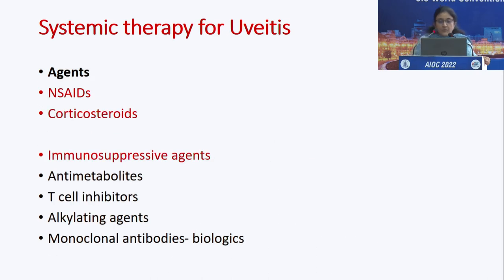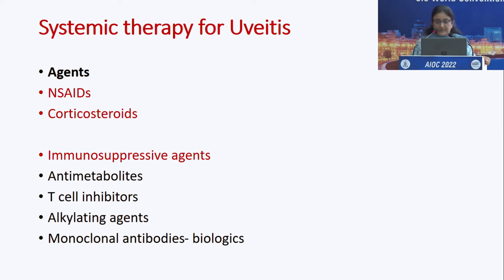The disadvantages are systemic side effects and cost of therapy that can sometimes be unaffordable. Available systemic medications include NSAIDs, corticosteroids, and immunosuppressive agents — including anti-metabolites, T-cell inhibitors, alkylating agents, and monoclonal antibodies commonly known as biologics.